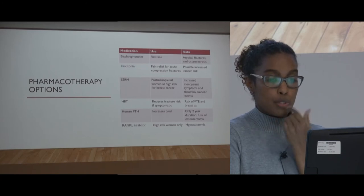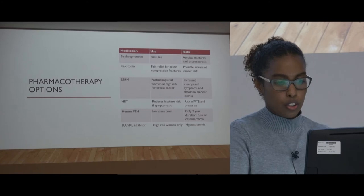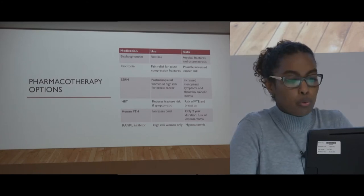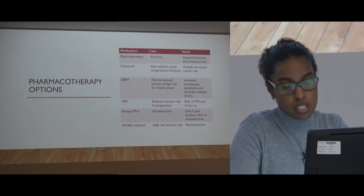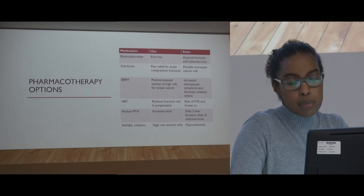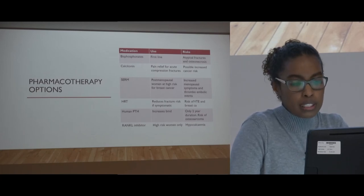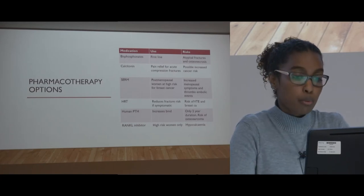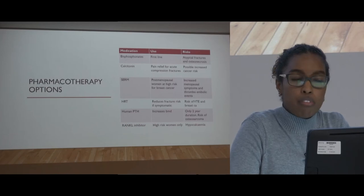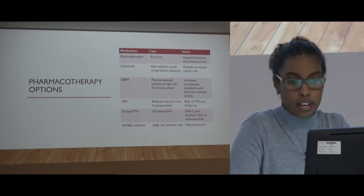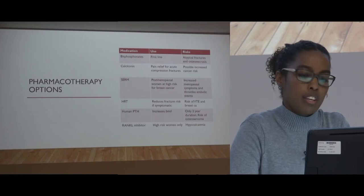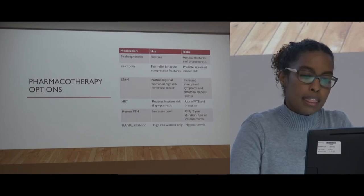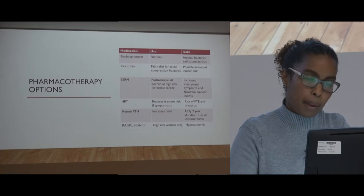There are other options including human parathyroid hormone, which will increase your bone mineral density, but should only be used for two years because of the risk of osteosarcoma. And then there is the RANK ligand inhibitor, which can be used for very high-risk women — those who are at guaranteed risk of severe osteoporosis — but they are also then at risk of hypocalcemia.